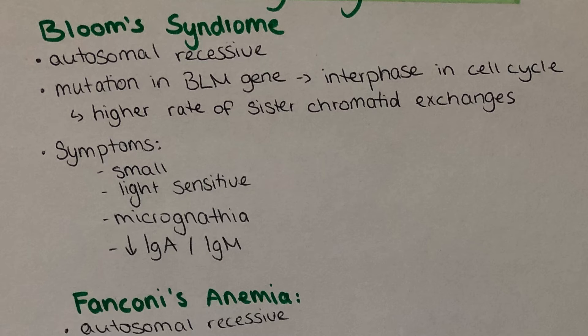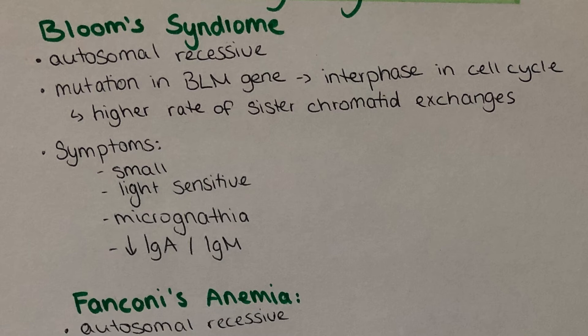The mutation is in the BLM gene, which codes for the Bloom syndrome protein — a helicase that controls the integrity of the interphase in the cell cycle. The mutation leads to defects in replication, DNA repair, and recombination. This results in a higher rate of sister chromatid exchanges, which is the exchange of chromosome pieces between two sister chromatids. In a normal individual the maximum rate is approximately six to ten exchanges, while in Bloom syndrome easily more than 50 sister chromatid exchanges can be seen. Also here there is no cure, only therapy with antibiotics and prophylactic vaccines.